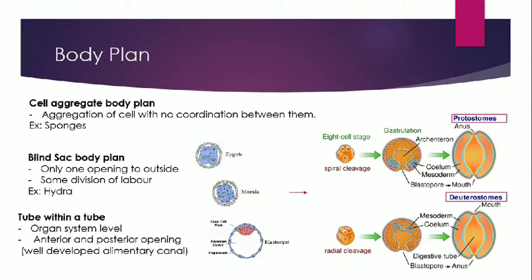Body plane is further classified into three types: cell-aggregate body plan, blind-sac body plan, and tube-within-a-tube. In the cell-aggregate body plan, cells are aggregated at one place performing specific functions but not coordinating with each other — similar to cellular level of organization, generally found in sponges. In the blind-sac body plan, there is division of labor among tissues, but there is only one opening to the outside, meaning one opening is used for both digestion and excretion — for example, Hydra.